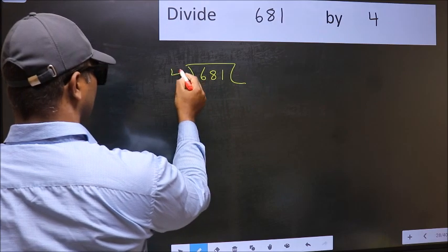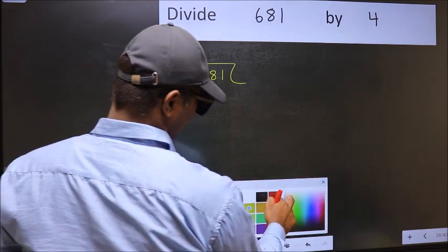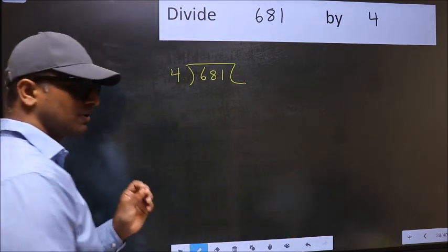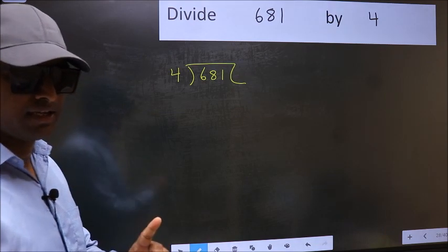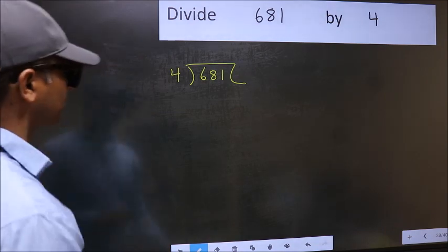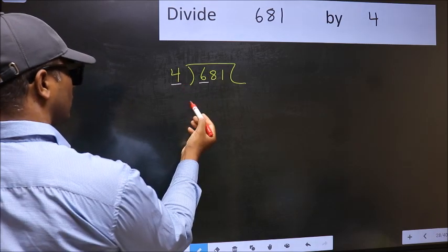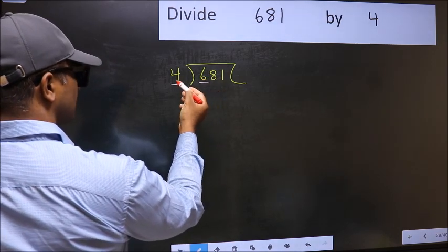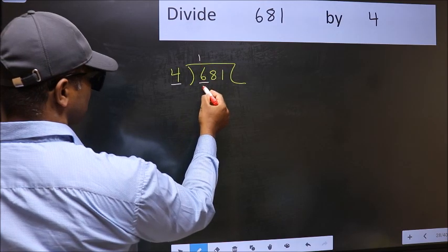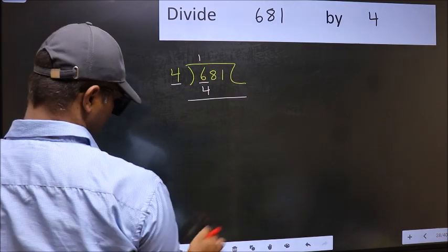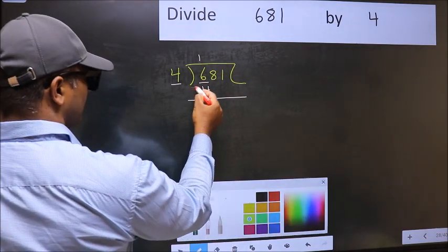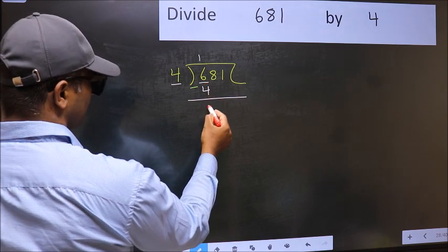681, 4 here. This is your step 1. Next, here we have 6 and here 4. A number close to 6 in 4 table is 4 once 4. Now you should subtract. 6 minus 4, 2.